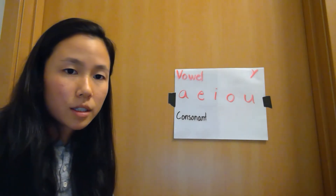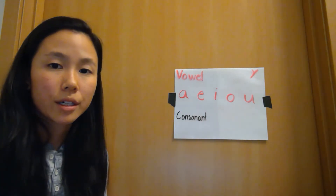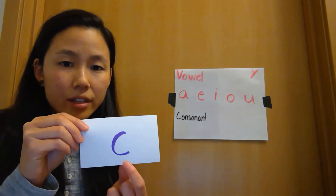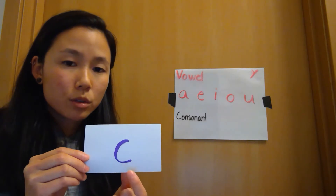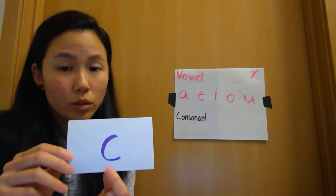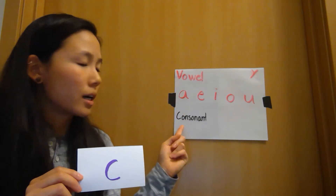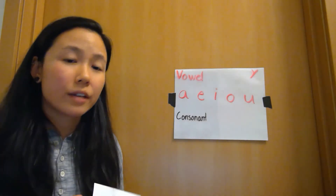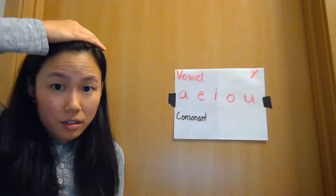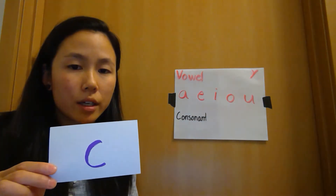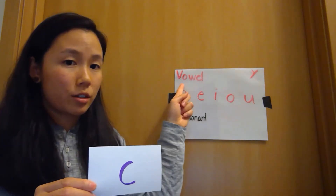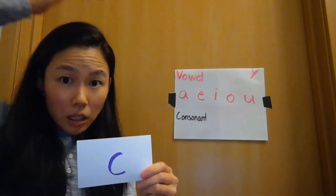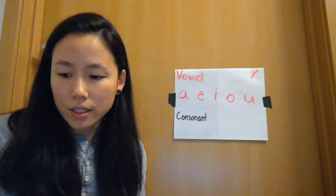Today we're going to do a couple of activities to help us think about which letters are vowels and which letters are consonants. The first activity is: I'm going to show you a flashcard with a letter on it, and I want you to say the name of the letter. If it is a vowel, stick out your tongue. If it is a consonant, put your hand on your head. So for example, C — that's a consonant.